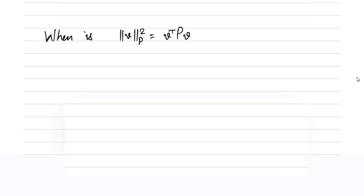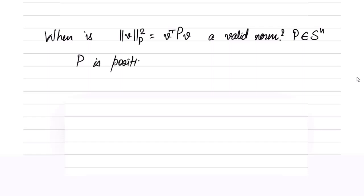Let us revisit the question we had asked earlier: when is the v-norm with respect to P, defined as v^T P v, a valid norm? We are asking this only for symmetric matrices. The answer is that whenever P is positive definite, we can say that this is a valid norm.